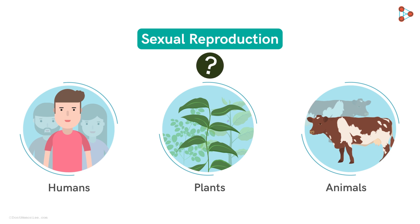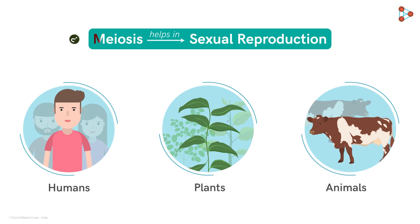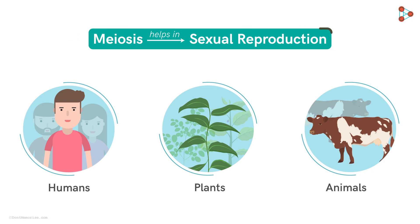And how is the process made possible? It all begins with a unique process of cell division called meiosis — the other type of cell division, in contrast to mitosis. And what exactly is meiosis about? Let's dive deeper to understand this beautiful concept in detail.